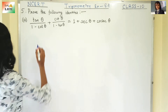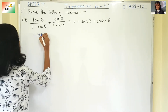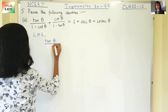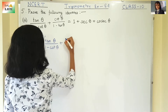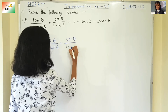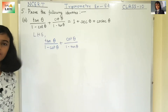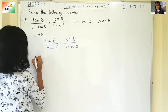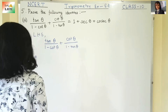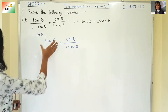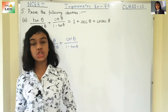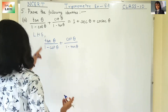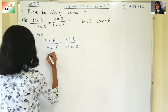First, what are we going to write? The left hand side: tan theta by 1 minus cot theta, plus cot theta by 1 minus tan theta. Now, we are going to convert tan theta and cot theta into sin theta and cos theta. We will always try to do this. So what is tan theta? It is sin theta by cos theta.